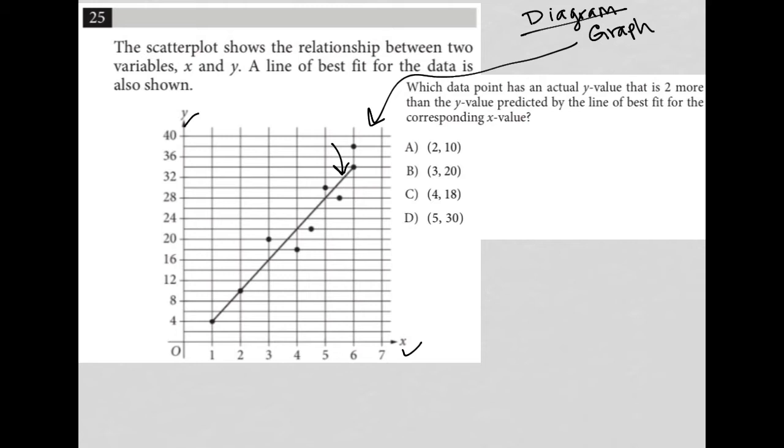We see some data points that are above the line of best fit. The first one is when x equals 3, the line of best fit says the y value should be 16, but it's actually here at 20. That's four higher, so that's not correct.